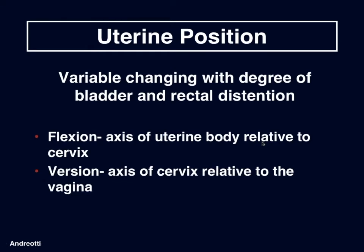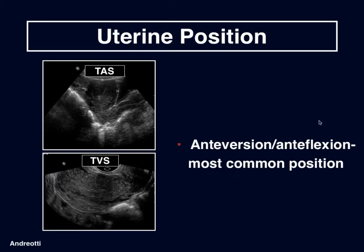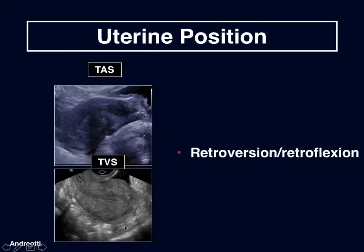What about uterine position? This can be variable and changes with the degree of bladder and rectal distension. We talk about flexion — the axis of the uterine body relative to the cervix — and version, which is the axis of the cervix relative to the vagina. An anteverted, anteflexed uterus is the most common position, where the cervix is anterior with respect to the vagina, and the corpus is pointing anteriorly with respect to the cervix. An example of a retroverted, retroflexed uterus has the cervix posterior with respect to the vagina and the corpus pointing posteriorly.